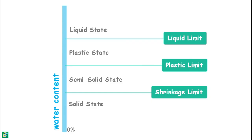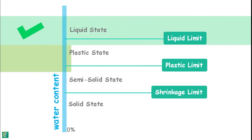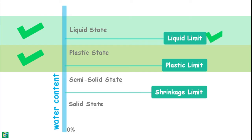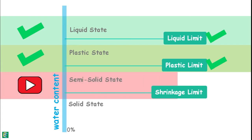We have already discussed the liquid state, plastic state, liquid limit, plastic limit, and methods of their determination. In this video, we will discuss the semi-solid state and shrinkage limit of the soil.